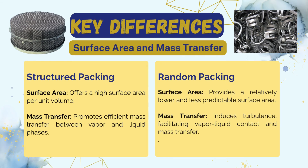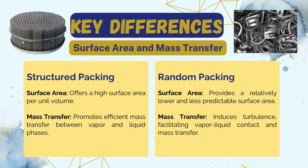The second key difference is surface area and mass transfer. Structured packing offers a high surface area per unit volume and promotes efficient mass transfer between the vapor and liquid phases. Random packing provides a relatively lower and less predictable surface area, and mass transfer is facilitated through induced turbulence promoting vapor-liquid contact.